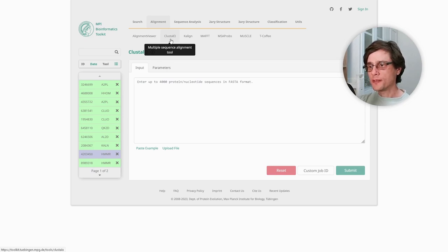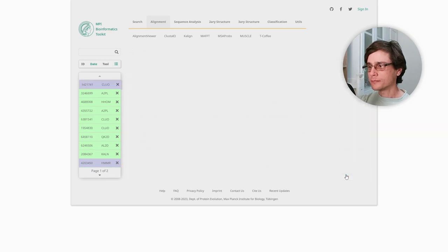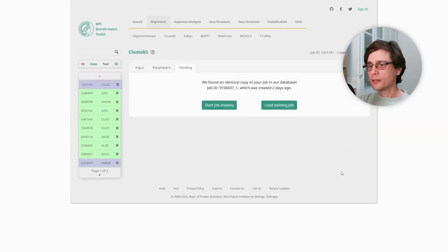The input is at least two protein sequences. We can click Paste Example and get an example input. Then we'll click Submit. Rather than actually running the multiple sequence alignment, we can load the results of a previous run of the same input if it exists.